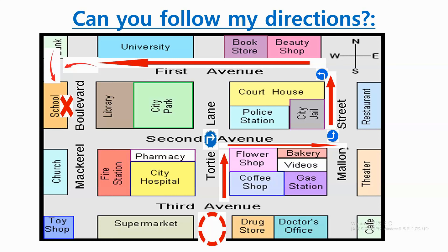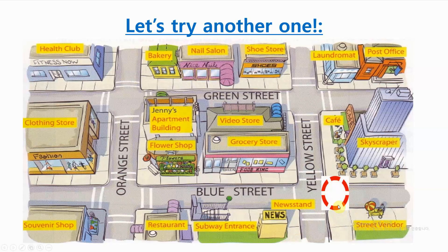Was that your answer? Let's try another one. We're going to start here at the circle. Listen carefully and try to find the final destination. Go one block down Blue Street and turn right onto Orange Street. Go one block and turn right at Jenny's apartment building onto Green Street. Go half a block down Green Street.